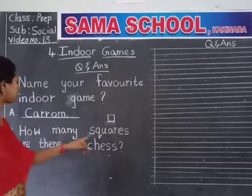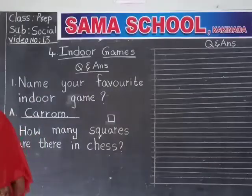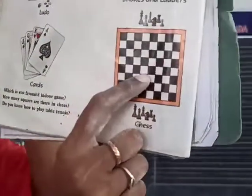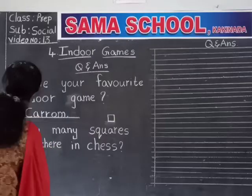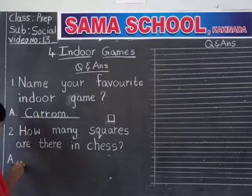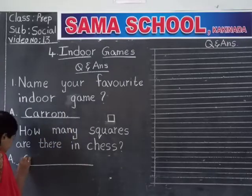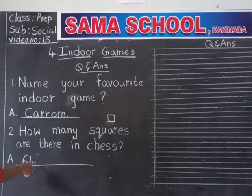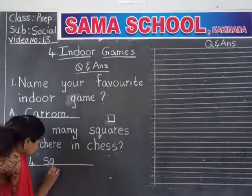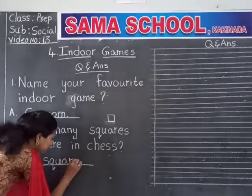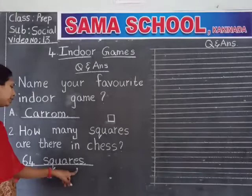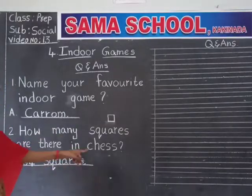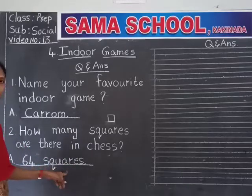How many squares are there in chess? Already told you. This is the chess board — how many squares are there? Sixty-four. How many squares? Sixty-four. Answer is sixty-four squares. S-Q-U-A-R-E-S. Sixty-four squares.